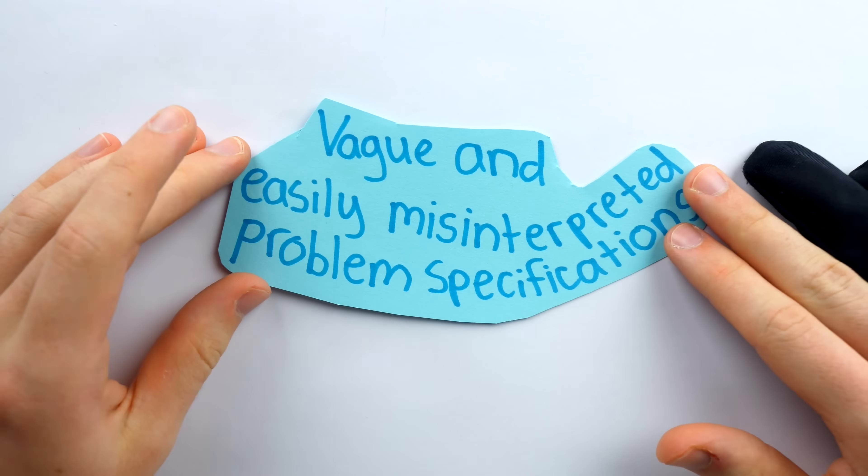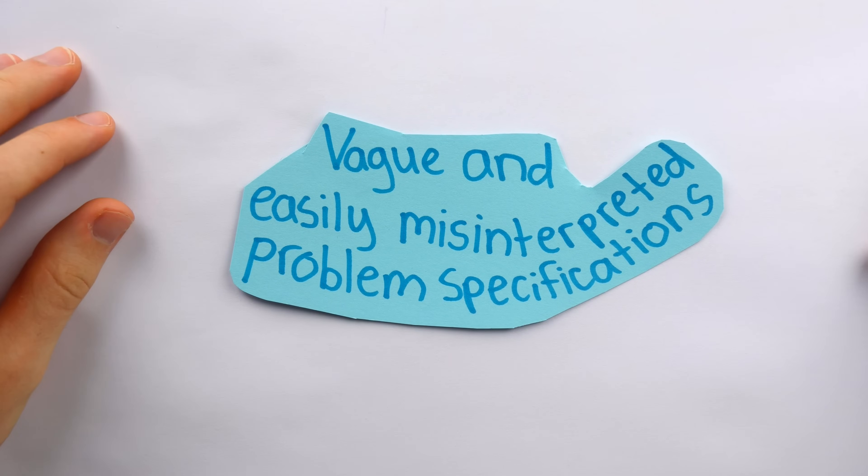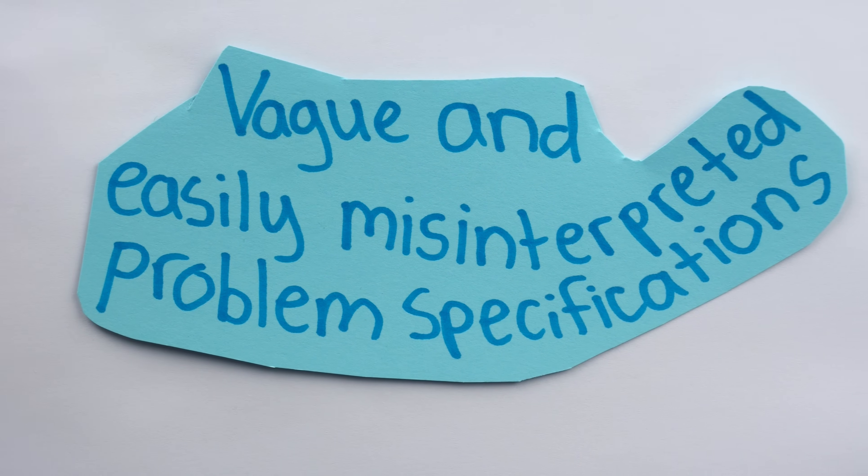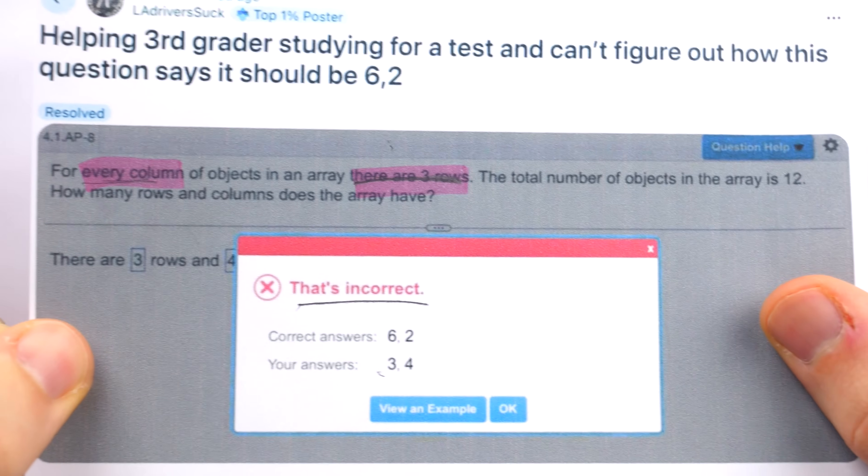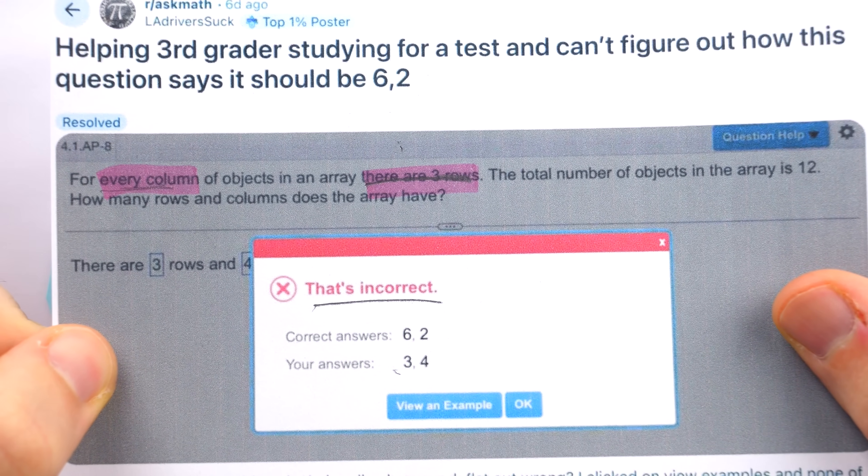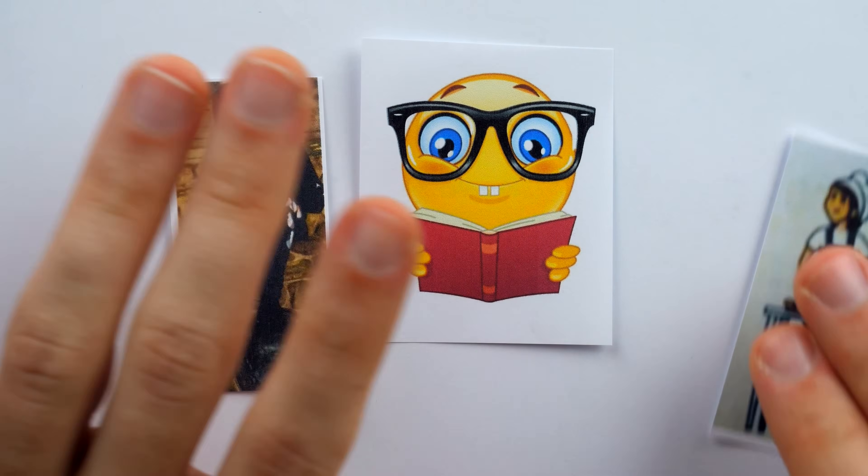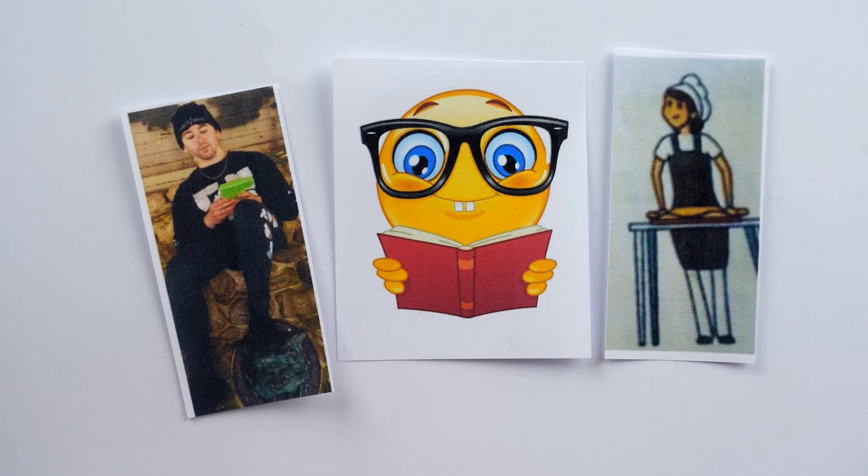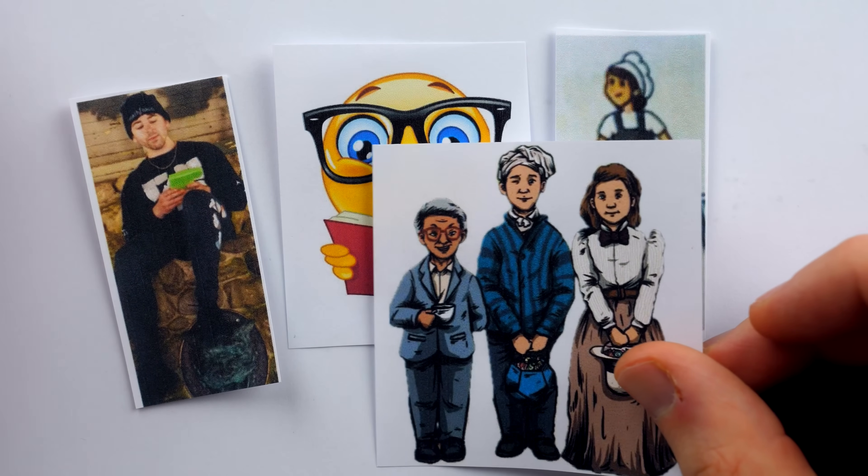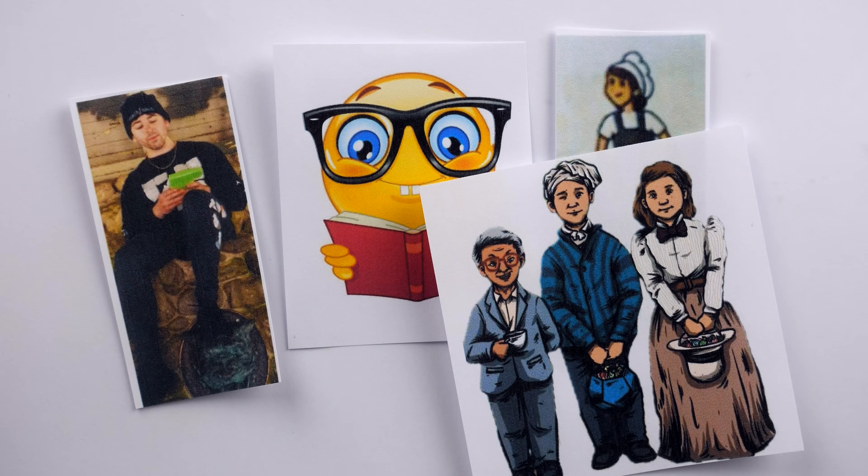Well, of course, it's our old friend, vague and easily misinterpreted problem specifications. The wording of this problem is just a bit unfortunate. Let's say that me, you, our friend Dina, and our friends Paul, Leonard, and Emma are all going sledding.